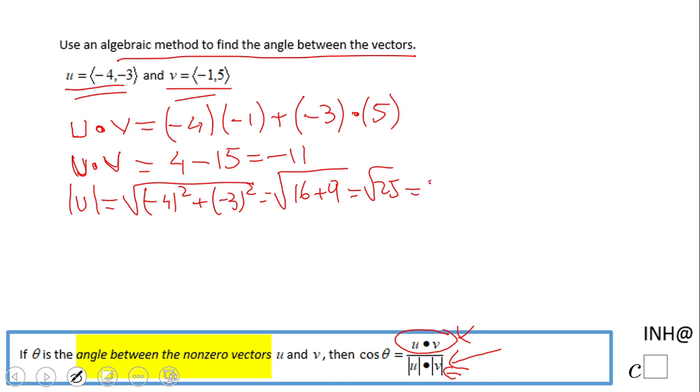The same we're gonna do for vector v. The magnitude is square root of negative 1 squared plus 5 squared, which is 1 plus 25, square root of 26.